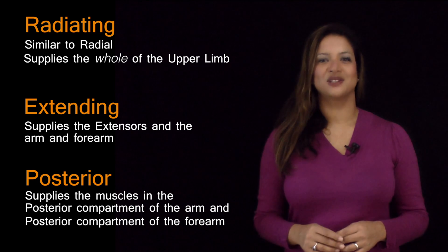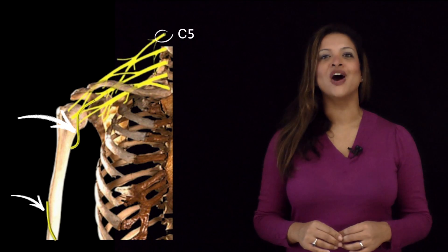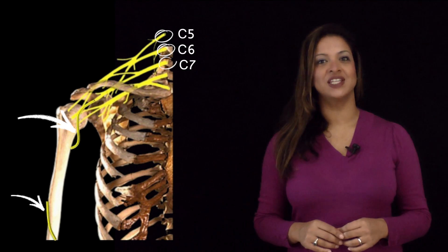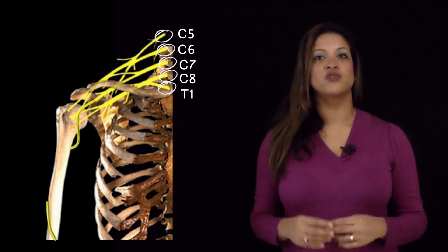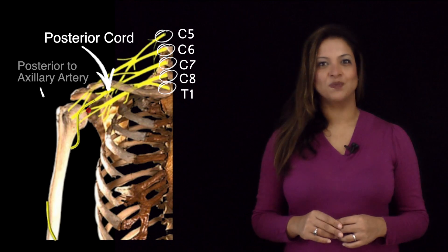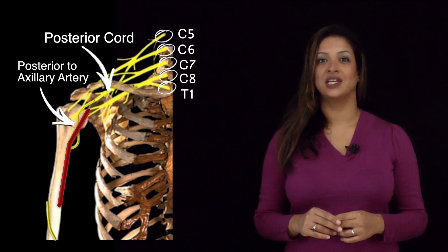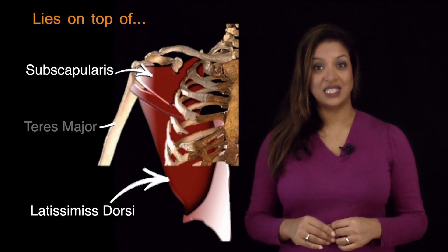The radial nerve has extensive nerve roots, arising from all of the nerve roots of the brachial plexus: C5, C6, C7, C8 and T1. It arises from the posterior cord of the brachial plexus and lies posterior to the axillary artery. At this level it lies on top of the muscles of subscapularis, latissimus dorsi and teres major.